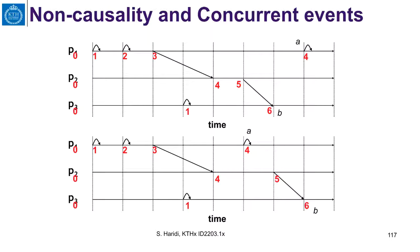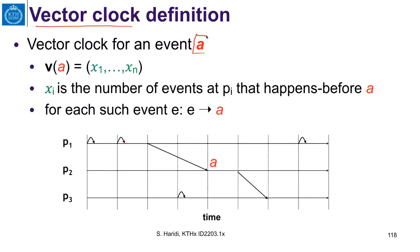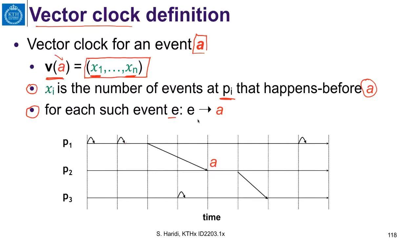So now let us define the notion of a vector clock. The vector clock of an event A is a vector of n elements. The elements correspond to the number of events occurring on each process — X1 is events happening at process P1, and Xn is events happening at process Pn. Xi is the number of events at Pi that happen before our event A.